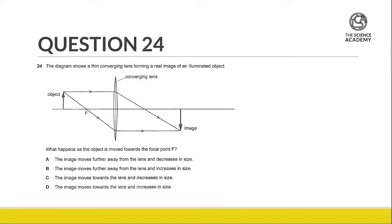For question 24, we have a thin converging lens forming a real image on an illuminated object. For every single lens diagram, there are a few things that we must always draw. The first thing is the ray that moves from the top of the object all the way through the optical center and just goes all the way straight through.